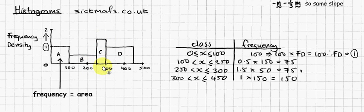So you're simply going to do 1.5 times 50, which is 75 as well. And finally, 300 to 450 times 1, because that's the height of 1. So 150 times 1, the frequency is 150, and that's it. I believe that, by the way, ignore it, that's another topic.